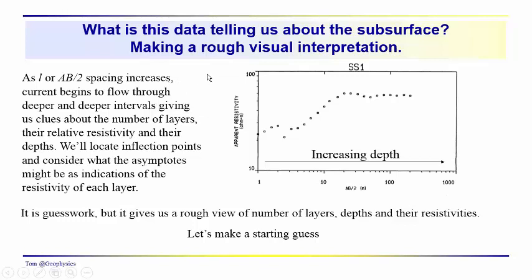Well let's take a look at forming an interpretation of the first sounding. As we mentioned last time, remember the data that we're looking at in IX1D, we have AB over 2, or sometimes it's referred to as L over 2 or capital L over 2 or little l. They all are basically the same.